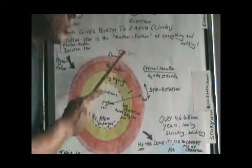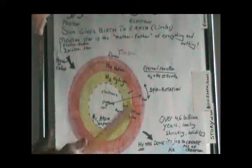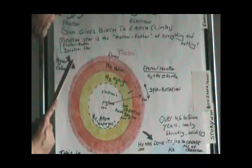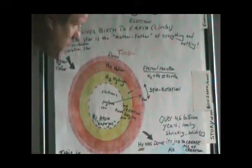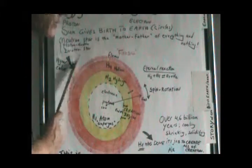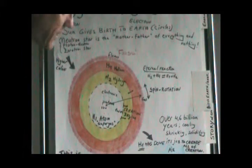When the earth was first spit out of the sun, it was like a big fireball. It started spinning, rotating and spinning faster. It went around the sun and started to cool off and shrink.